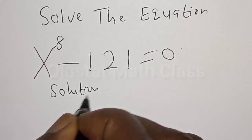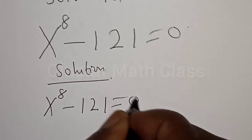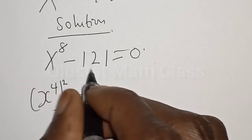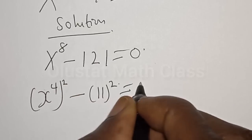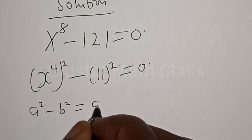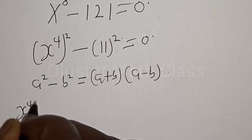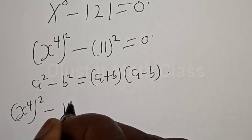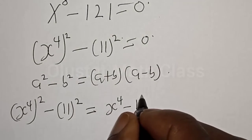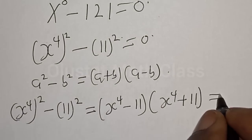Solution. We have the given equation as s raised to power 8 minus 121 is equal to 0. Then s raised to power 8 can be expressed as s raised to power 4, all squared, and 121 can be expressed as 11 squared, equal to 0. Now remember, if you have a squared minus b squared, it is equal to a plus b multiplied by a minus b. Therefore s raised to power 4 all squared minus 11 all squared is equal to s raised to power 4 minus 11, multiplied by s raised to power 4 plus 11, and everything is equal to 0.